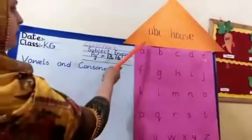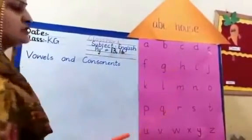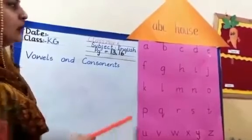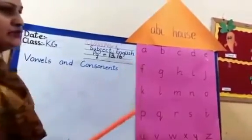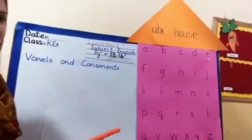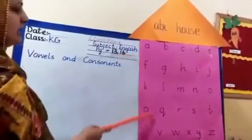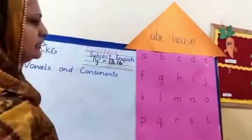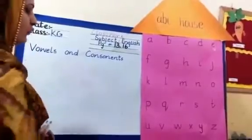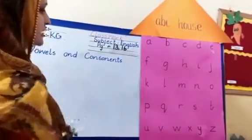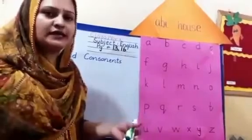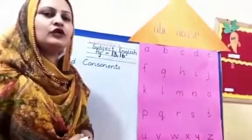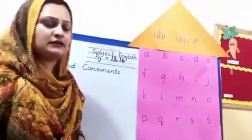Look at the whiteboard. Here we have an ABC house. As you already know about it, I will tell you a story today. There was an ABC house where all A to Z letters were living happily together. One day, some of the letters decided to go outside to the park and want to enjoy and play there.